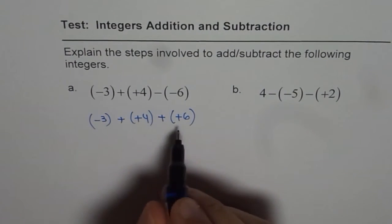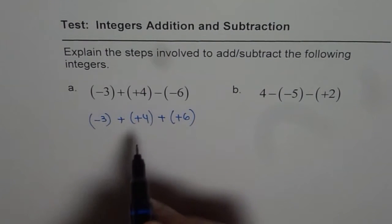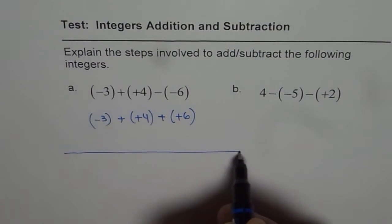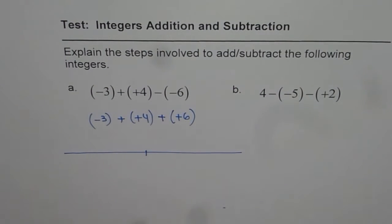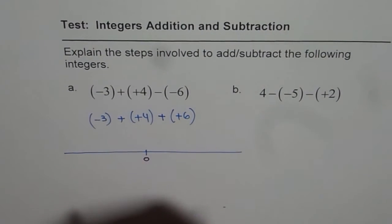So, once you write this as an addition statement, then it becomes simpler to add on a number line. Let me show you how. So, on a number line, let us draw a number line now. So, let us say this is the number line. And these are our marks. That is the zero.